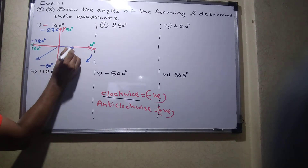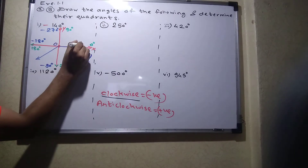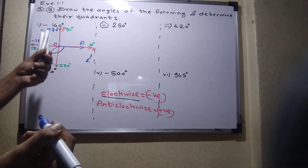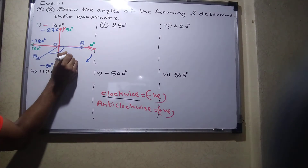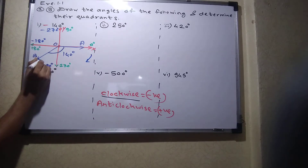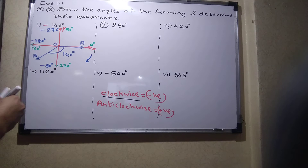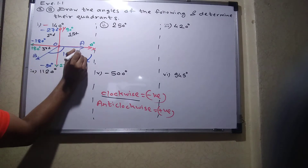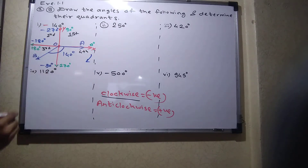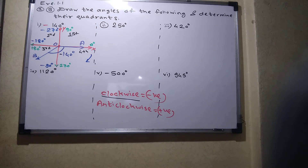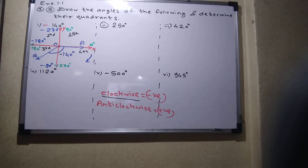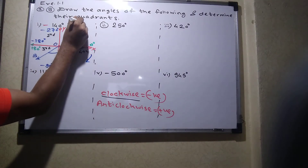So this is our required angle AOB — just a rough diagram, not accurate. The point B at minus 140 falls in the third quadrant. First quadrant is here, second here, third here, fourth here — minus 140 is in the third quadrant.